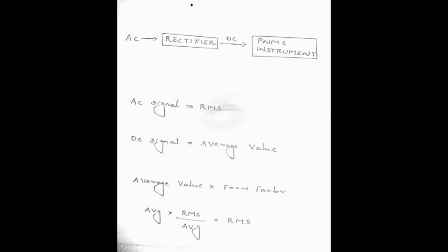We have a problem. We have an AC meter and we have to measure the AC signal in the meter. The AC signal is measured in RMS. If we measure a DC signal in the meter, it is Average. So the AC signal is RMS and the DC signal is Average.